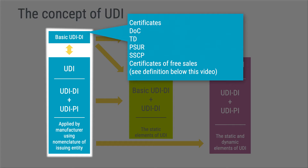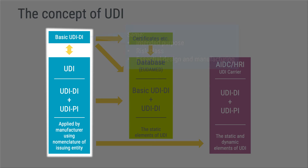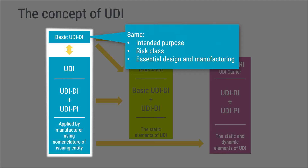Worth noting for those of you taking this course outside Europe is that the basic UDI-DI is unique to the European Union, and therefore there is no corresponding code available in, for example, the US, which has already and will probably continue to cause some confusion. The basic UDI-DI is a collective code used to cover devices with the same intended purpose, risk class, and essential design and manufacturing characteristics. The basic UDI-DI shall not be on any device or packaging — it is only used as a collective term for grouping devices and for reporting into EUDAMED.